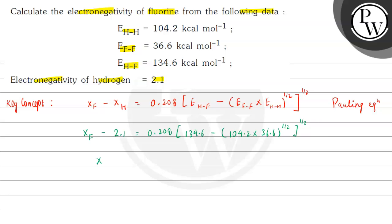So electronegativity of fluorine minus 2.1, when we solve this, equals 1.77.